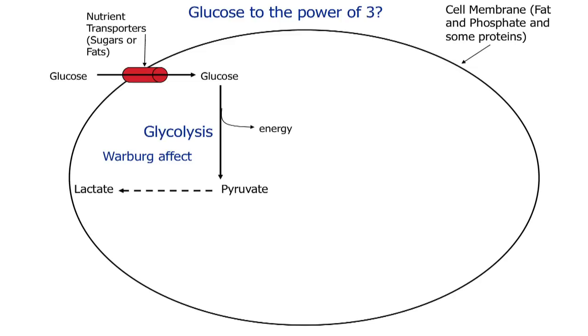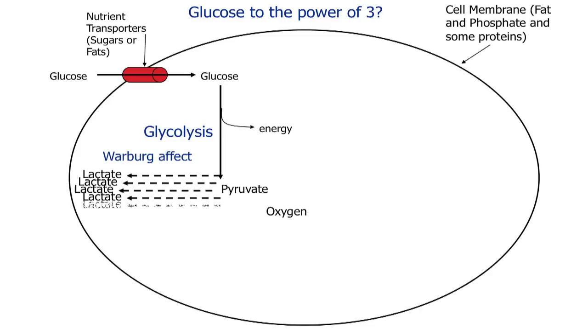About a hundred years ago, Otto Warburg made an observation in a number of cancer cells. Despite the presence of oxygen being quite freely available, certain cancer cells tend to make lots and lots of lactate — hundreds of times more than you would see in a normal cell. His experiments showed that was mostly because these cancer cells were utilising glucose as their predominant energy source, using the glycolytic pathway despite there being oxygen and potentially available mitochondria.